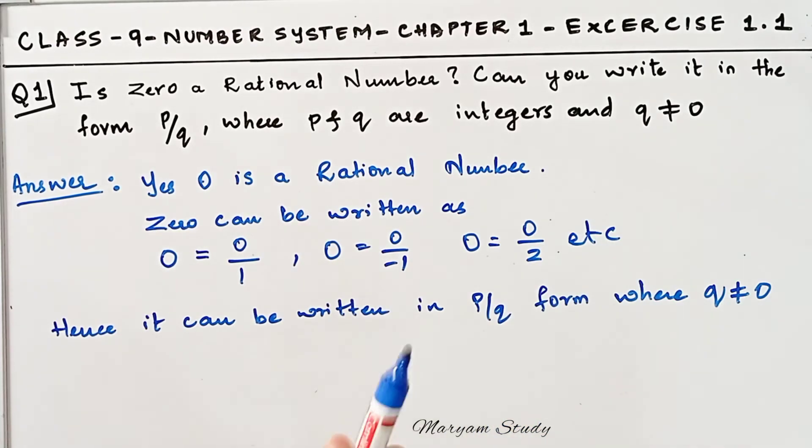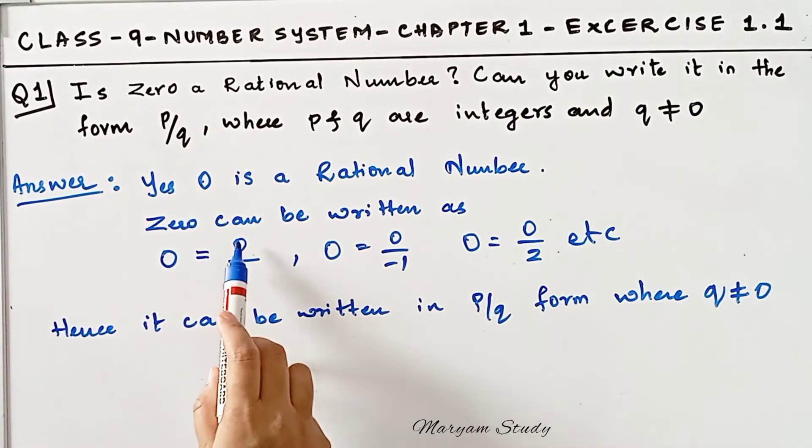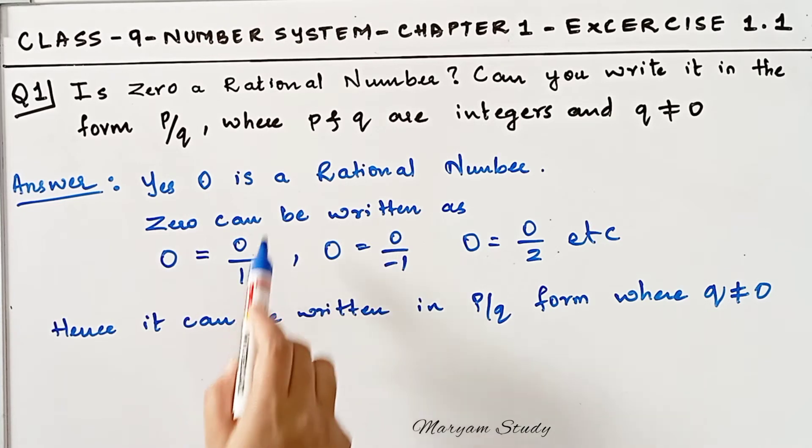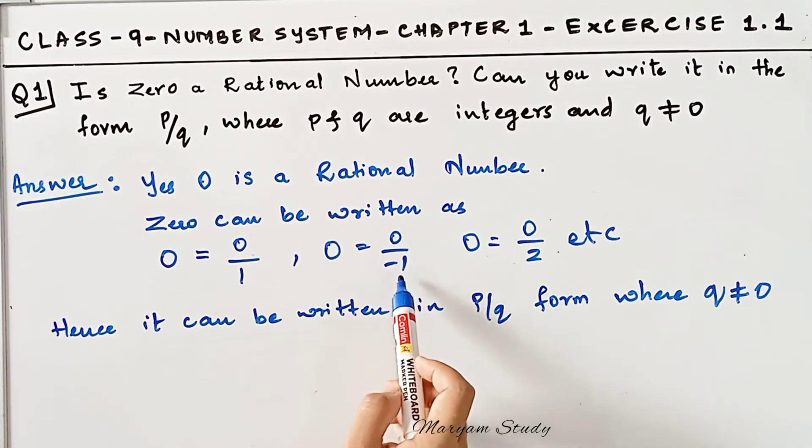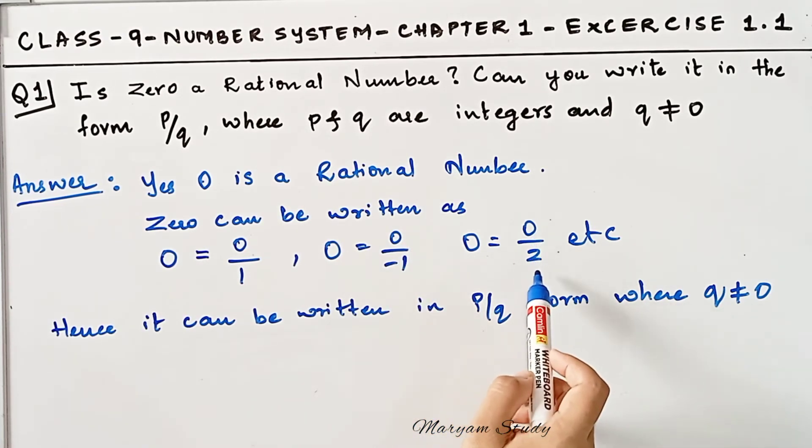So what is the question here? Can you write it in the form of P by Q? Yes, we can write in P by Q form where P and Q are integers. 0 is also an integer, 1 is also an integer, minus 1 is also an integer, and 2 is also an integer.